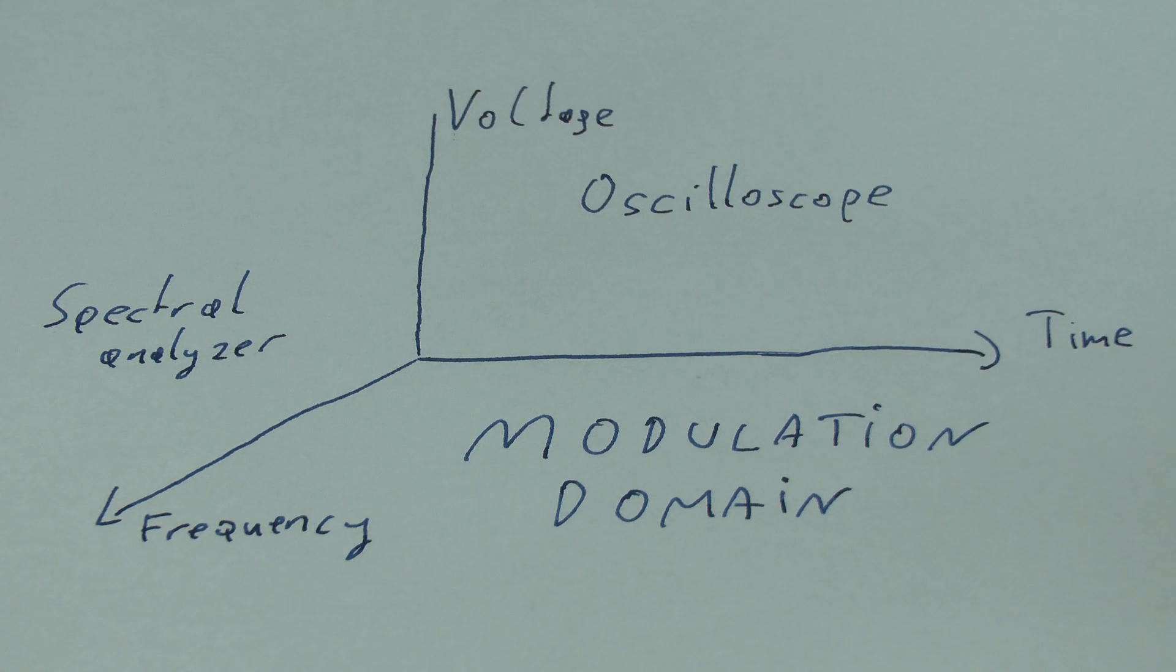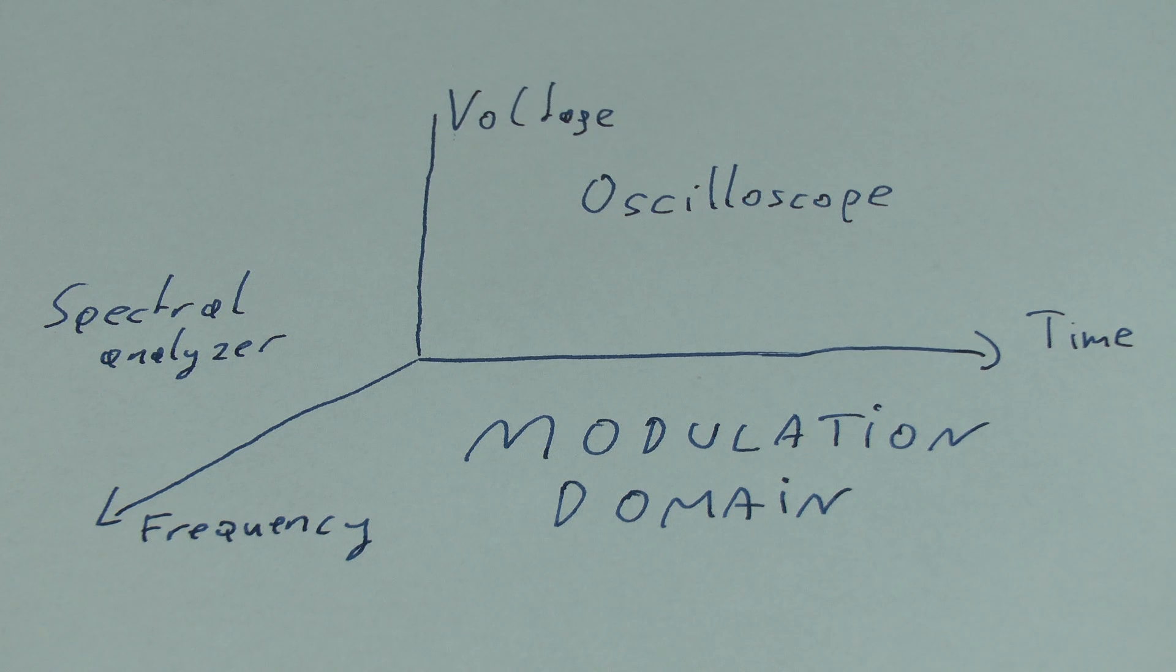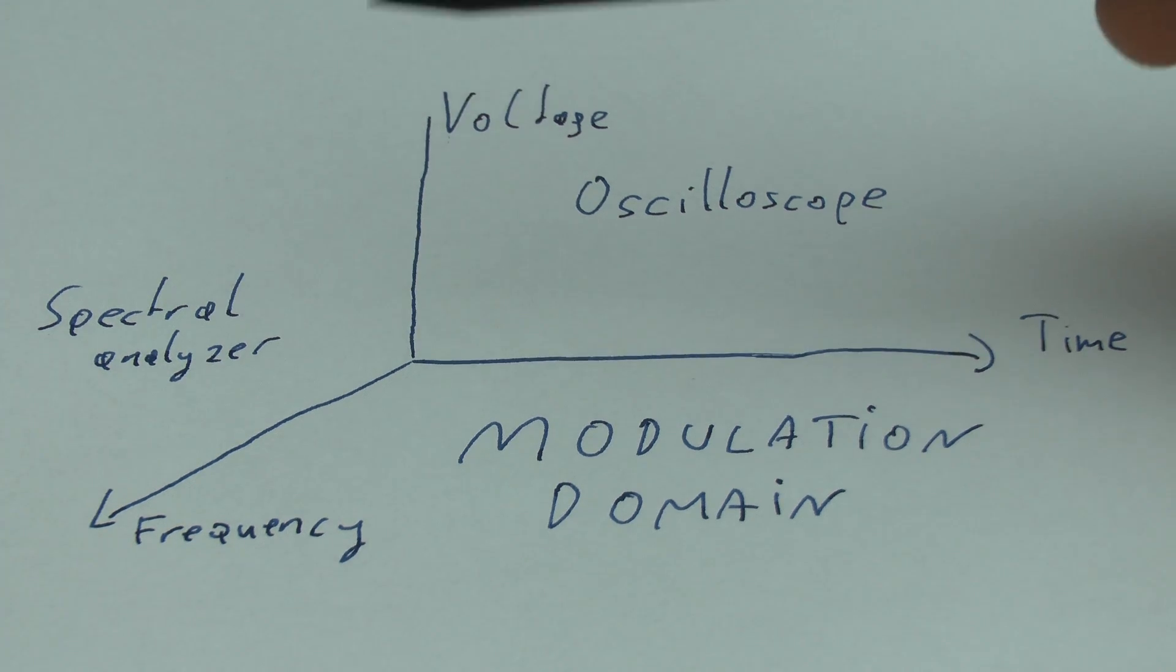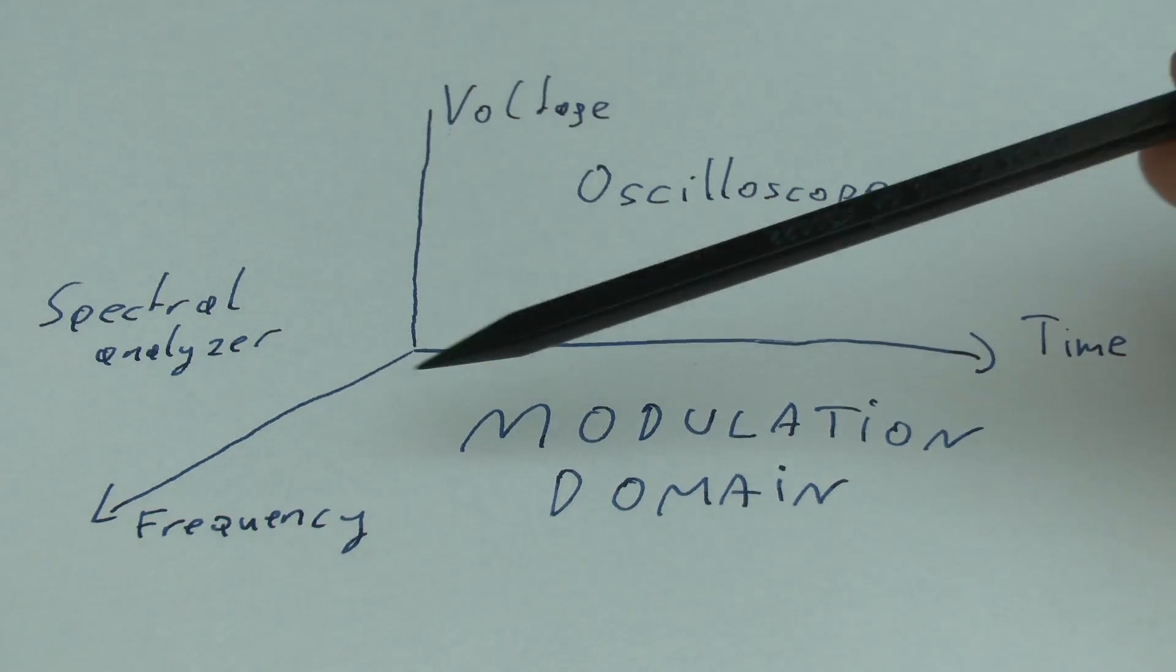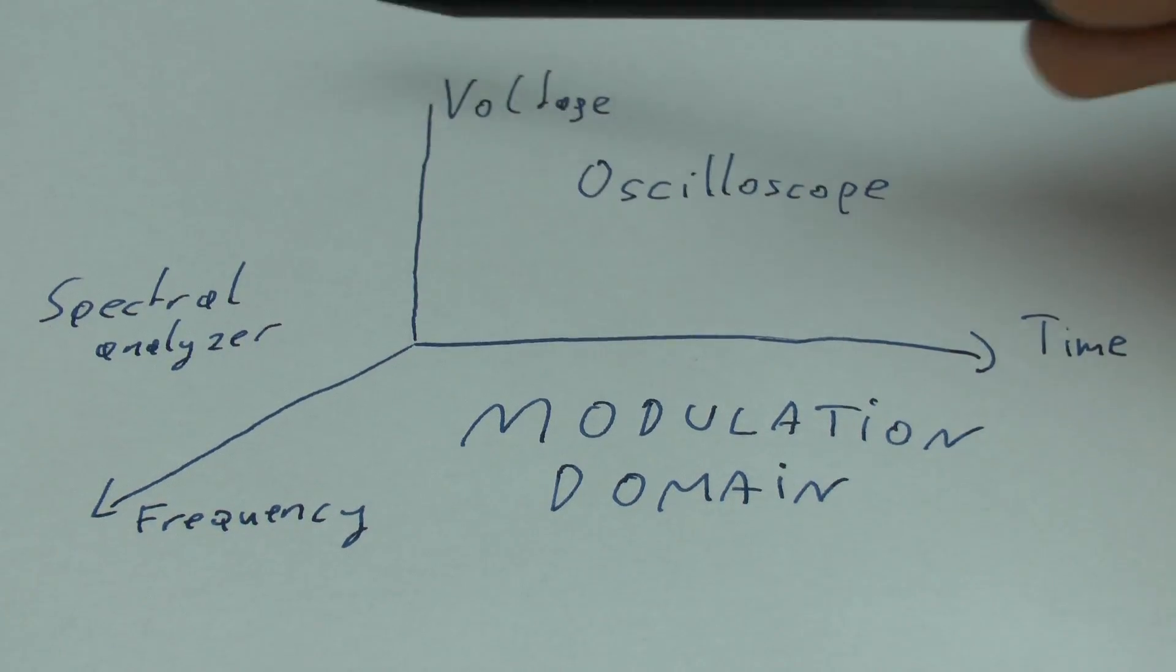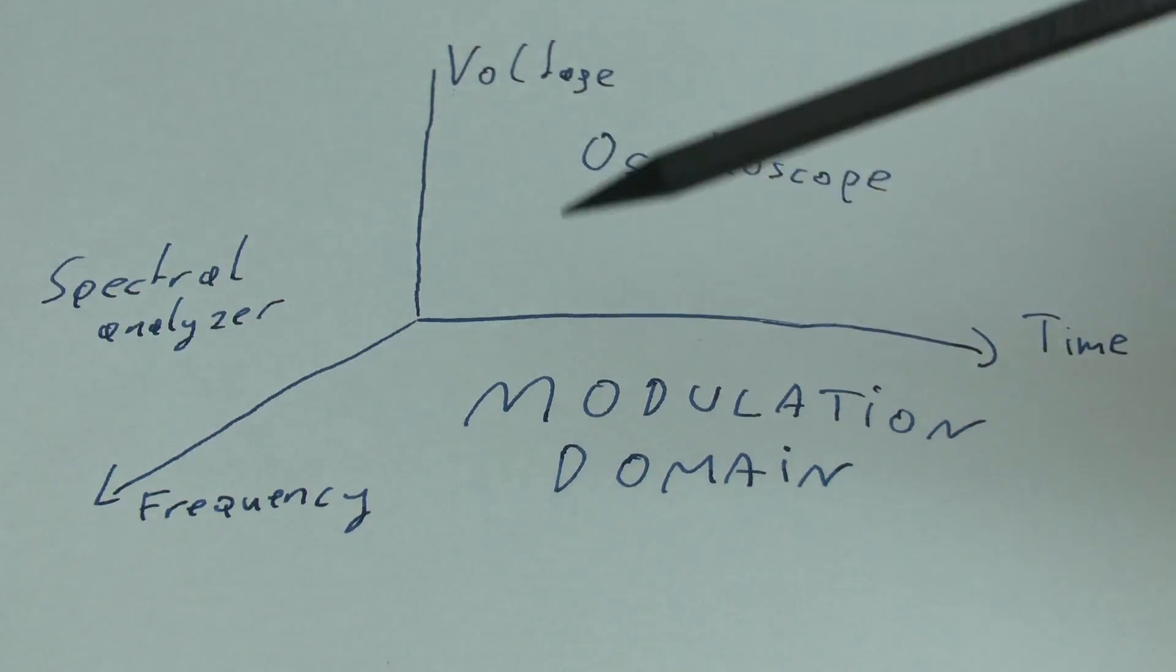Leading to the well-known sines, triangles, all that kind of stuff. If we perform an FFT on this data, or if we use a spectrum analyzer, we end up in the spectral domain, which gives us the voltage over the frequency, which is in this area over there.